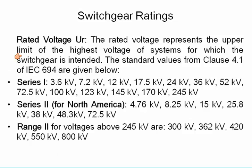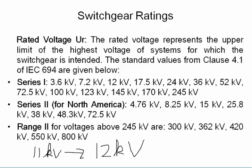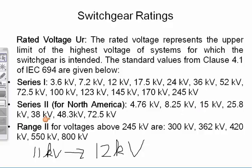Rated voltage is the equipment rating. It's specified as 10% over the nominal voltage. So for an 11 kV system, rated voltage would be 12 kV. A 22 kV system would have 24 kV. In Australia you'd probably use 12, 24, 36 and so on. In the United States they use 7.2, 17.5 and different ranges — 15 kV, 25.8 kV, 38 kV and so on.